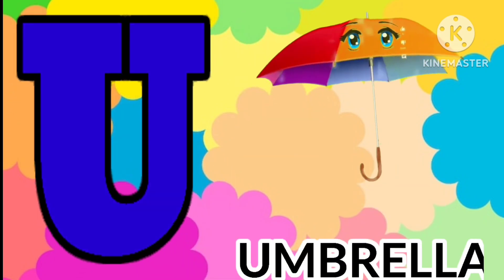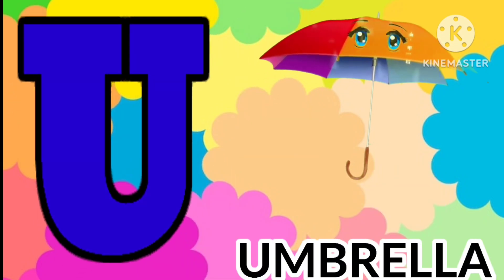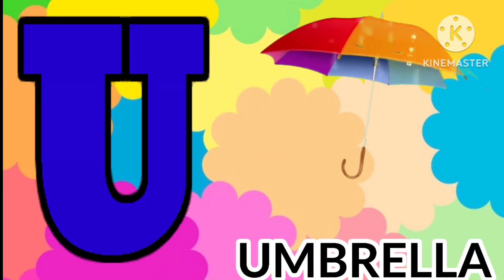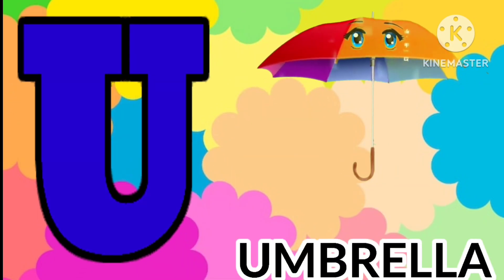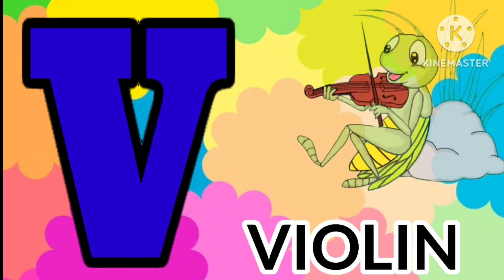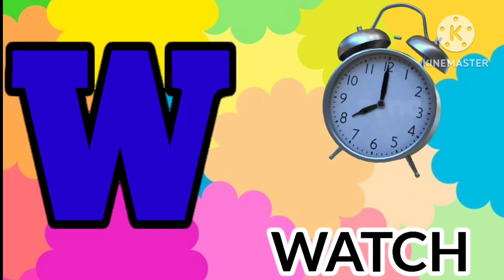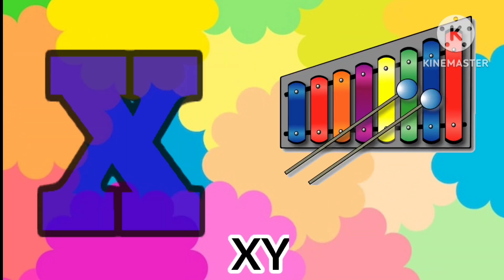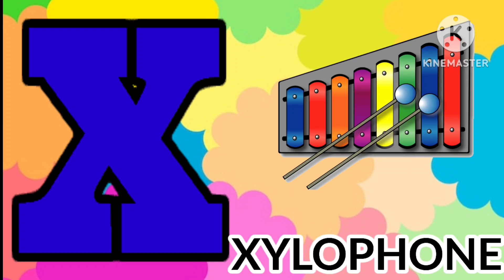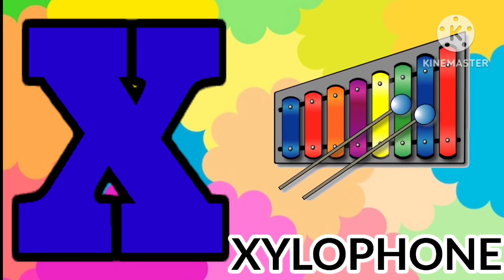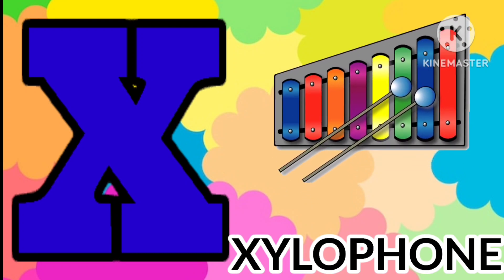U is for umbrella, u-u-umbrella. V is for violin, v-v-violin. W is for watch, w-w-watch. X is for xylophone, x-x-xylophone.